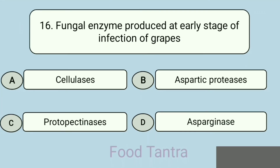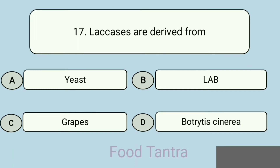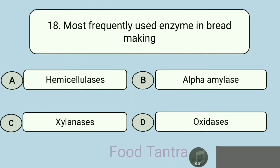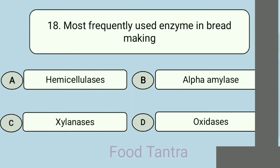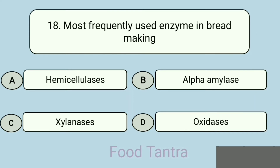Question 17: Laccases are derived from — Option A: Yeast. Option B: LAB. Option C: Grapes. Option D: Botrytis cinerea. Question 18: Most frequently used enzyme in bread making — Option A: Hemicellulases. Option B: Alpha amylase. Option C: Xylanases. Option D: Oxidases. Correct answer: Alpha amylase.